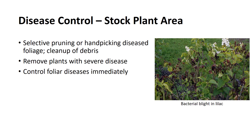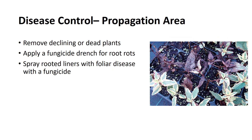Selective pruning or handpicking of diseased foliage can often control localized disease problems in stock plants easily and rapidly. A thorough cleaning of all infected plants and uninfected plant debris should be included. Stock plants with severe disease problems such as crown gall or mushroom root rot should be rogued from the stock plant area. Control measures for foliar diseases should be initiated rapidly to ensure that cuttings used in propagation are free from disease. Areas with declining or dead plants because of root diseases within propagation beds should be carefully removed and quickly sealed in large plastic bags, including all of the rooting media.